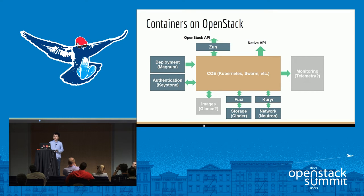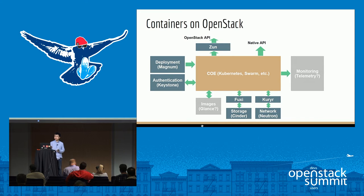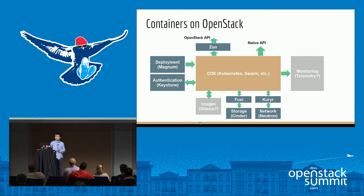First is deployment: you need a tool to deploy the COEs into a set of virtual machines and make sure they are managed and scaled. The Magnum project was created for this purpose. A COE also needs authentication — it needs a list of users, and in API calls it identifies and authorizes users. But COEs generally don't store a list of users in their own data store, so they need an external authentication service.